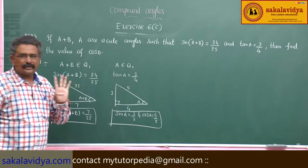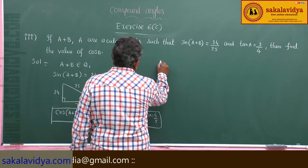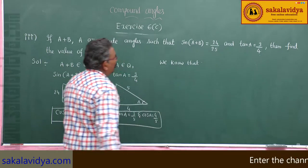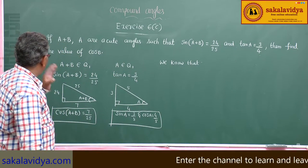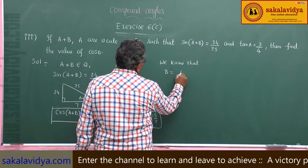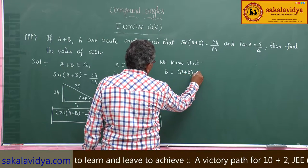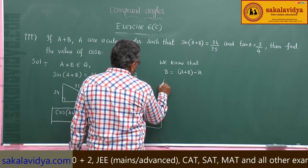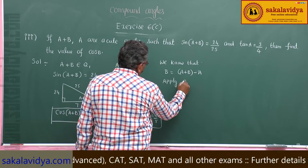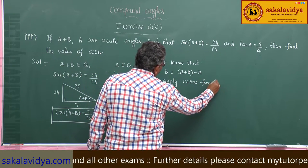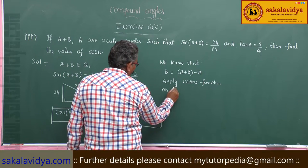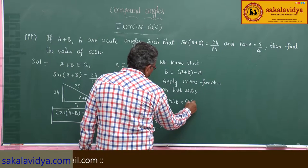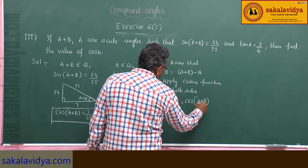Now we have to find out cos B. We can write B = (A+B) - A, so A cancels and we get B only. Applying the cosine function on both sides, cos B = cos((A+B) - A).